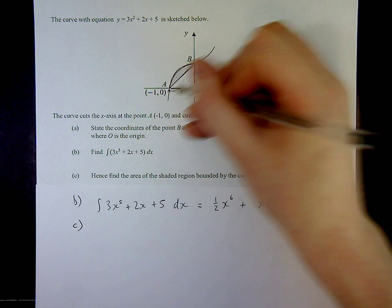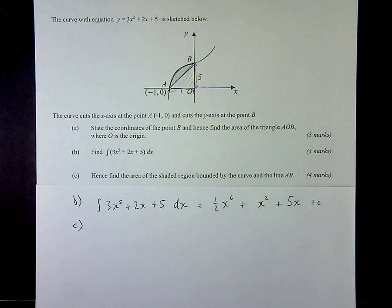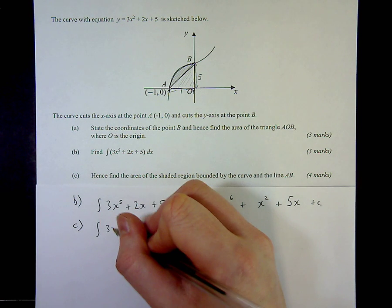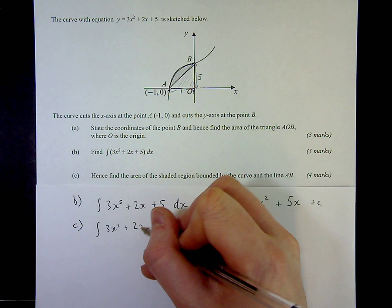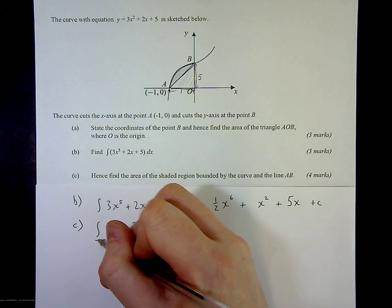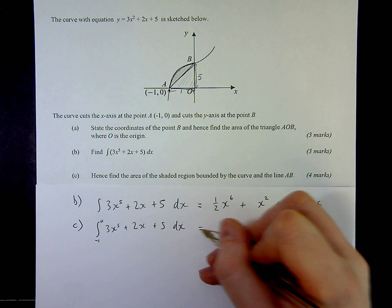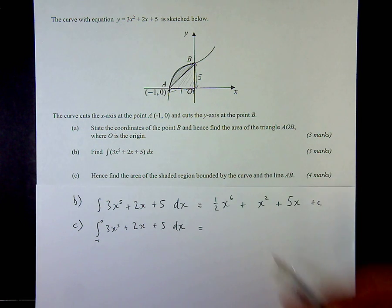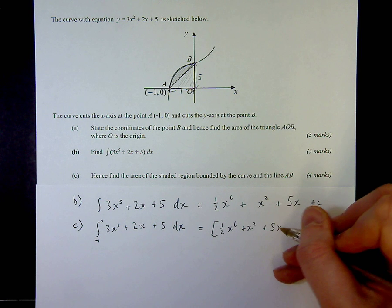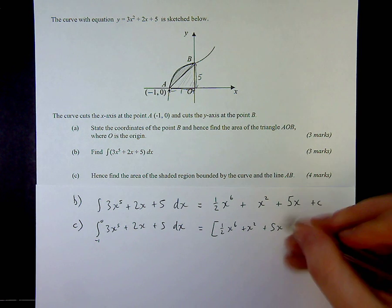So to do that, I need to find a definite integral. The equation of the curve which we used previously was that, and I want to find a definite integral between minus 1 and 0. Now I've already done the integration here. So it was x cubed plus x squared plus 5x. For a definite integral we don't need the plus C because we're going to be subtracting it later which will eliminate it, and that's between 0 and minus 1.